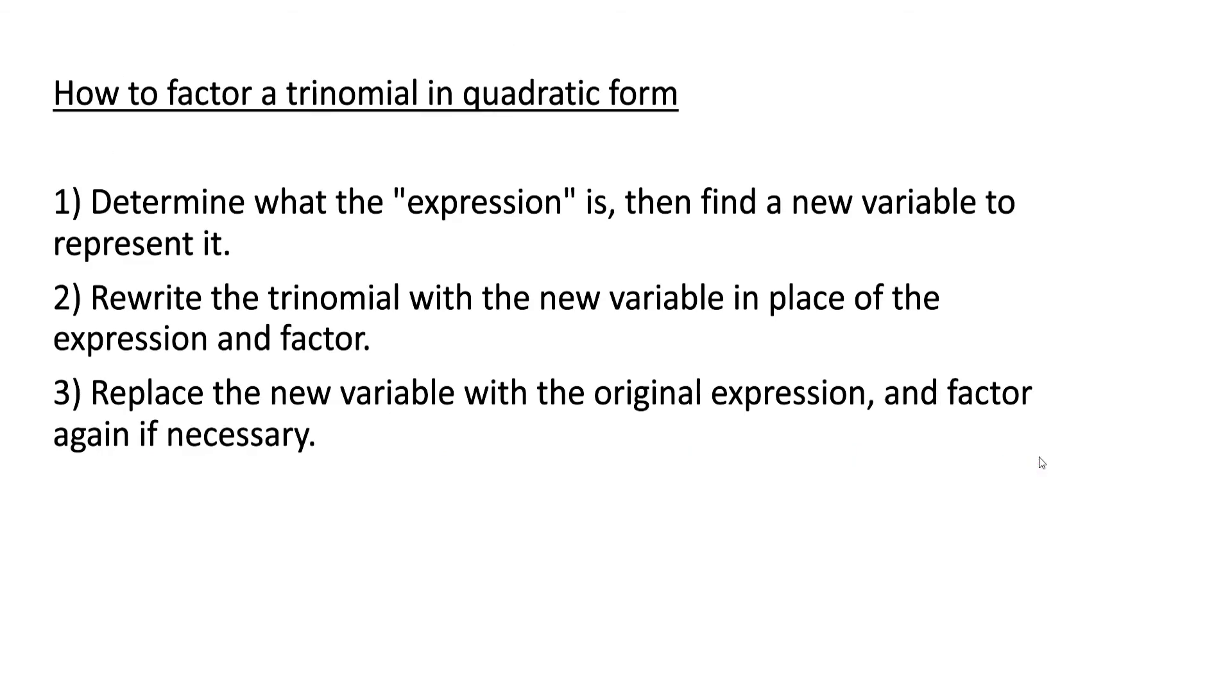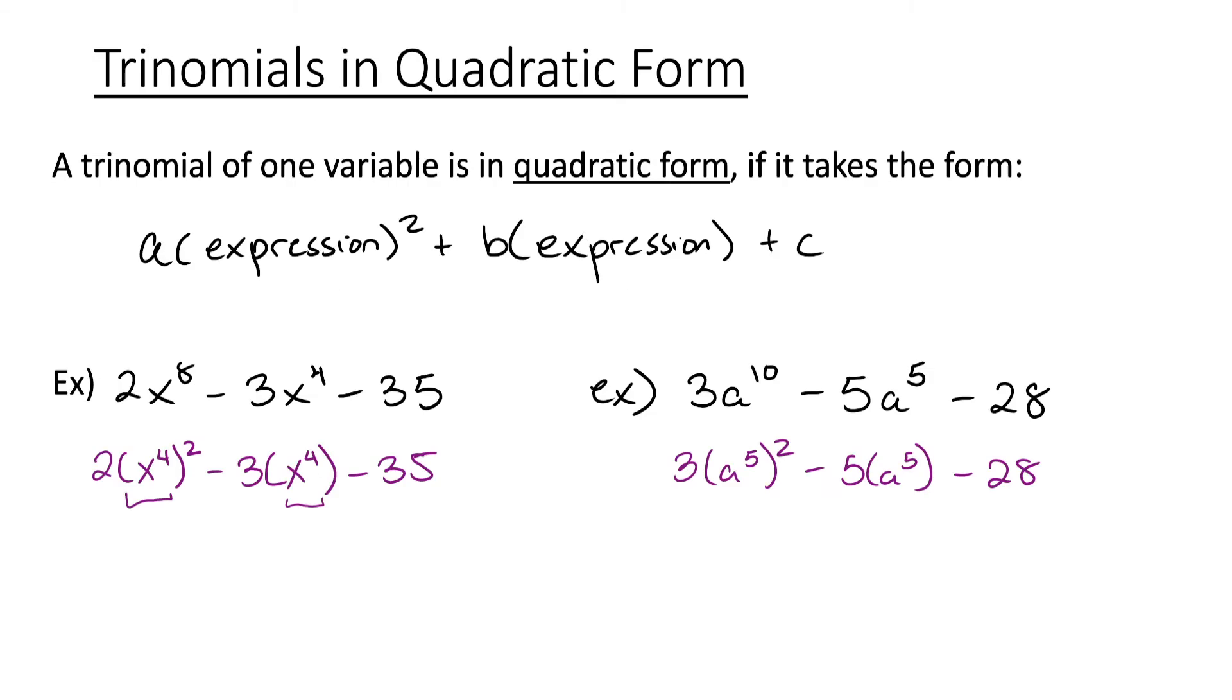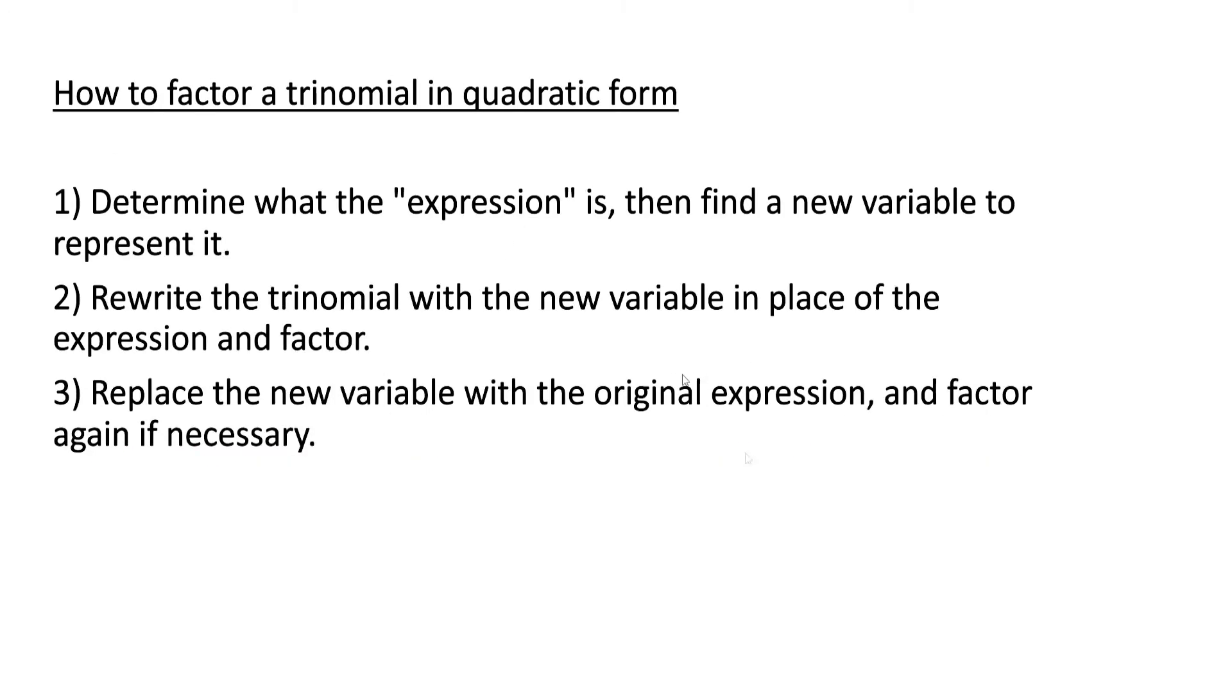Now we'll talk about how to factor trinomials in quadratic form. First you want to determine what the expression is. In the last examples we had x to the fourth is an expression and a to the fifth is an expression. Then you would find a new variable to represent it. Rewrite the trinomial with a new variable in place of the expression and factor. Replace the new variable with the original expression and factor again if necessary.